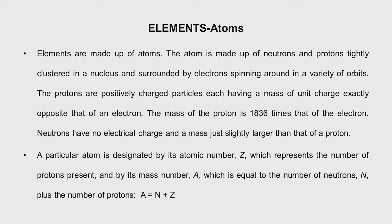How do we designate an atom of an element? We have what is called the atomic number, which refers to the number of protons present. The mass number accounts for both protons and neutrons, so the total mass is equivalent to the number of neutrons plus the number of protons. We represent this as A = N + Z.